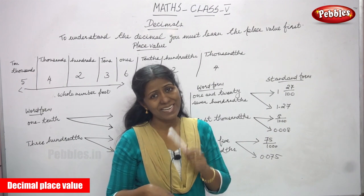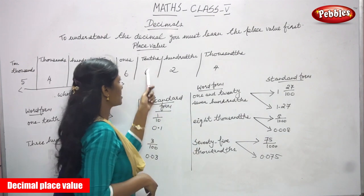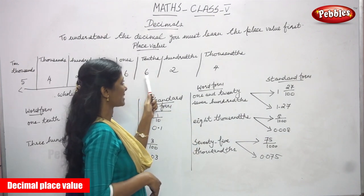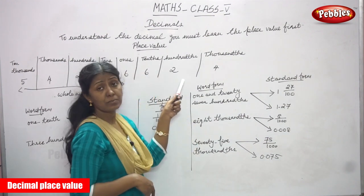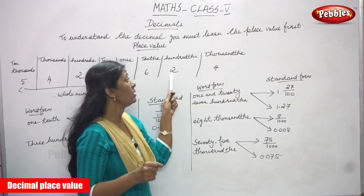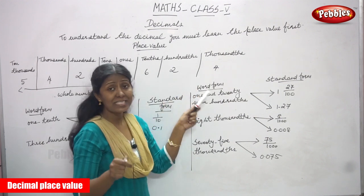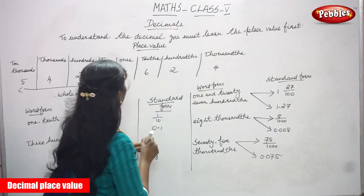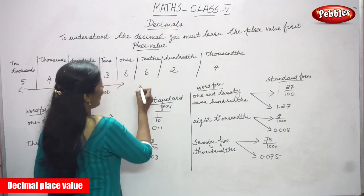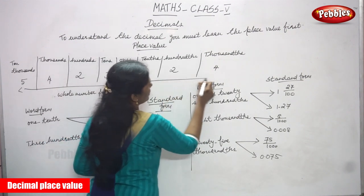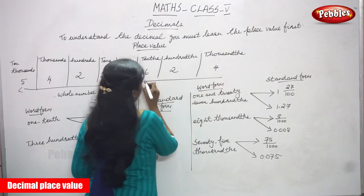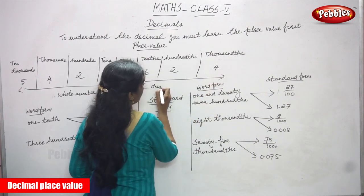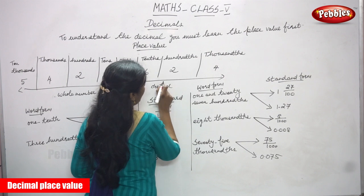In the tenths place value, the number is six. In the hundredths place value, the number is two. The thousandths place value number is four. So this part is called the decimal part — we can call it the decimal part.